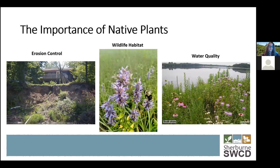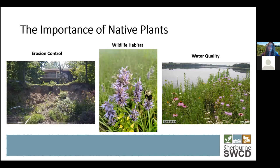Most of this talk is about the benefits of native plants. Ecological benefits include erosion control, habitat in the form of pollen and nectar resources for pollinators and other wildlife, and water quality, which goes hand in hand with erosion control. Native plants filter runoff coming from upland areas before it gets into surface water, and also allow for infiltration into the ground to help recharge our aquifers.